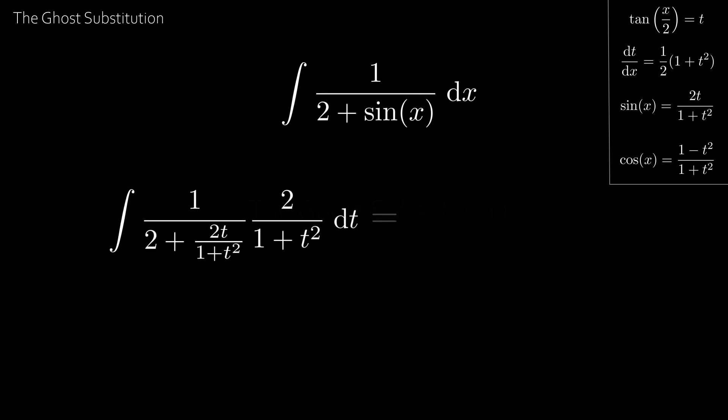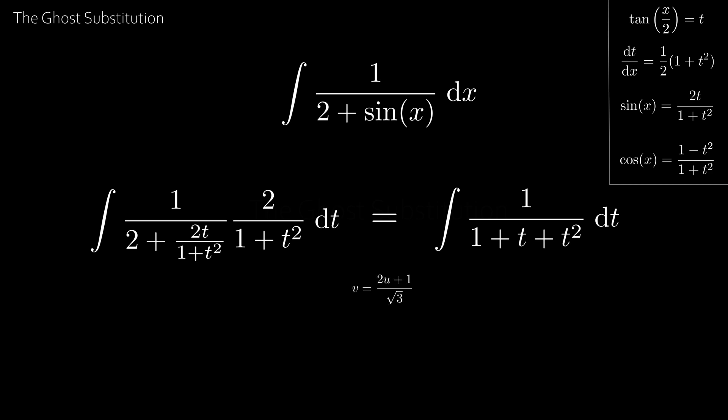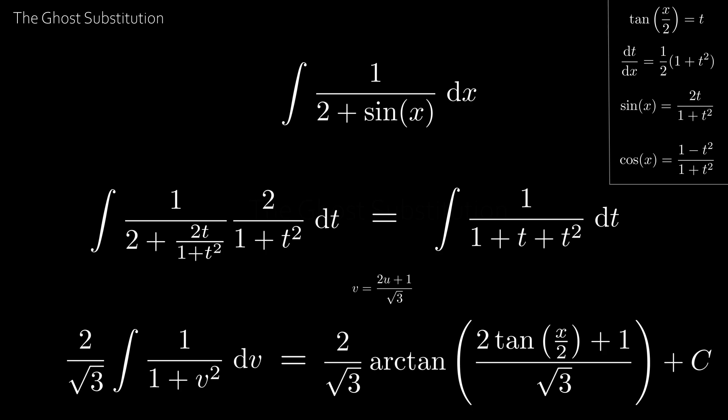Which after simplifying and cancelling, gives the integral of 1 over 1 plus t plus t squared. Now this is a standard integral to solve and can be solved through another standard substitution, giving us our answer. So here we can really see the power of the ghost substitution.